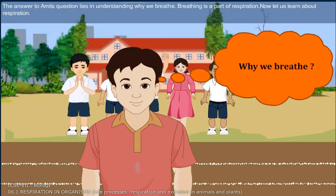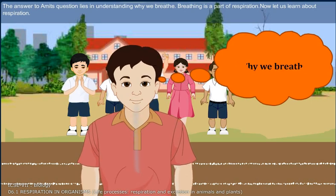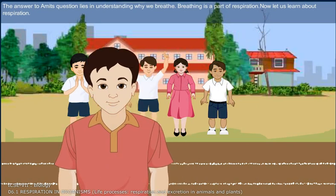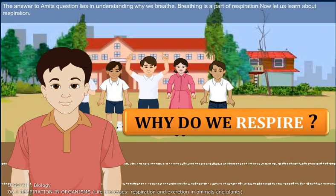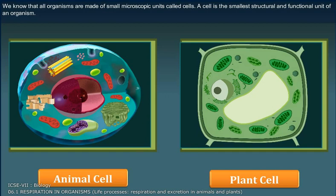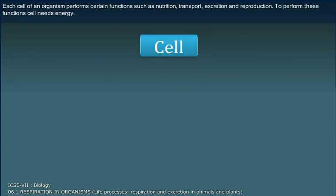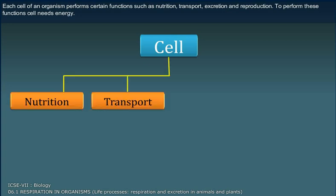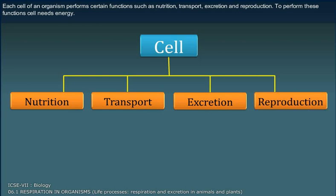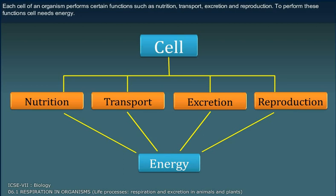The answer to Amit's question lies in understanding why we breathe. Breathing is a part of respiration. Now let us learn about respiration. We know that all organisms are made of small microscopic units called cells. A cell is the smallest structural and functional unit of an organism. Each cell performs certain functions such as nutrition, transport, excretion, and reproduction. To perform these functions, the cell needs energy.